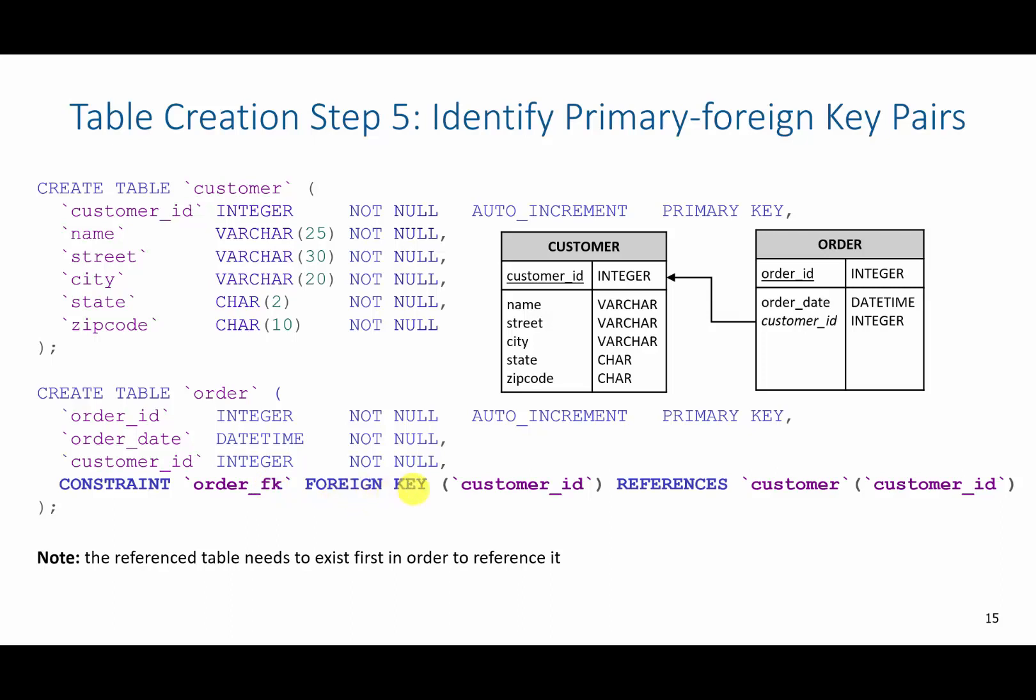Then I'm going to specify the type of the constraint. So this is going to be a foreign key constraint. It is going to use the customer ID in the order table to reference the customer ID in the customer table.